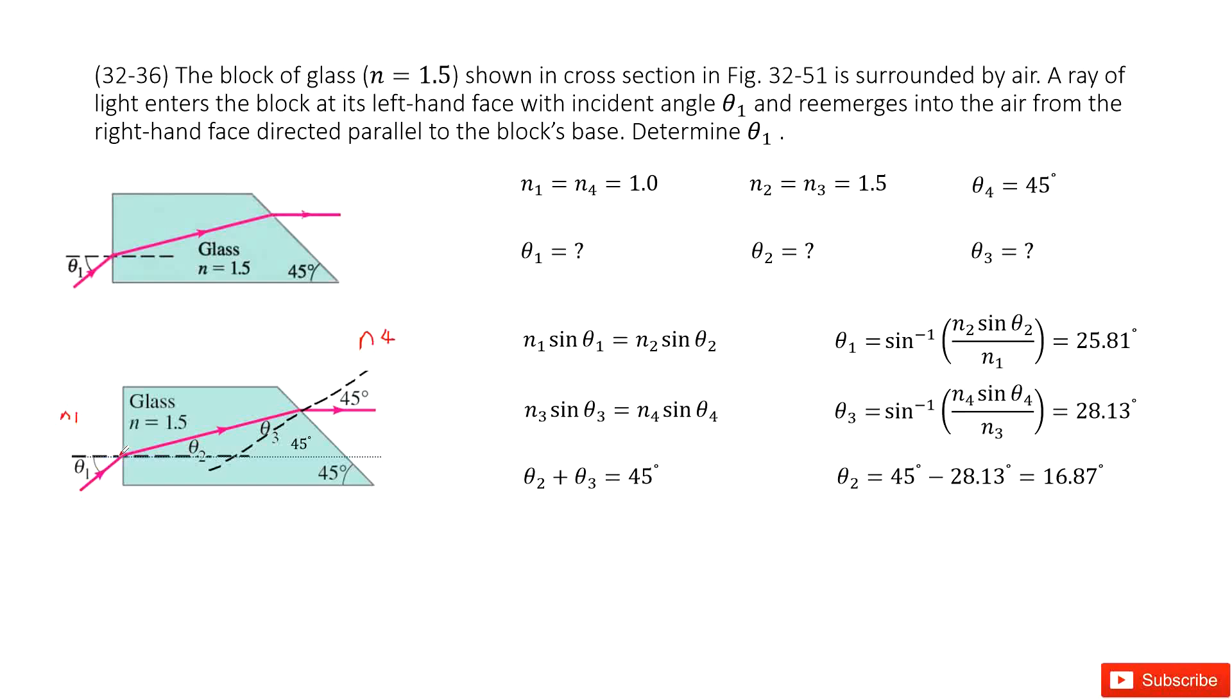We come from the very beginning. Snell's law at this point: N1 sin theta 1 in the air equals N2 sin theta 2. And then at this end we know N3 sin theta 3 equals N4 sin theta 4.